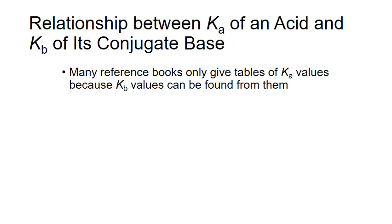We can calculate the pH of a salt solution containing the conjugate base anion of a weak acid if we know the base ionization constant, or Kb, for that conjugate base. Unfortunately, the Kb values of conjugate bases are not easy to find. Most reference tables only list the Ka, or acid dissociation constants, for primary acids. Luckily, we can easily calculate a Kb for a conjugate base using the Ka of its primary acid.